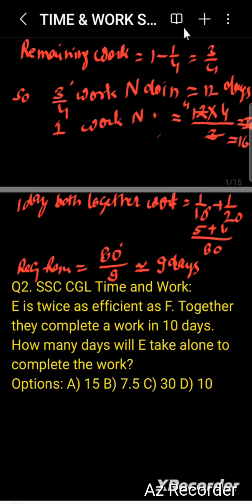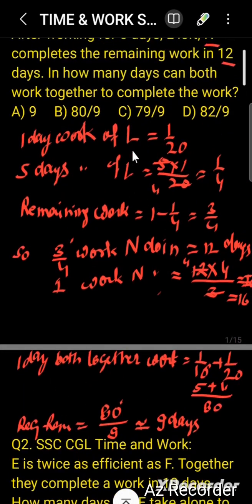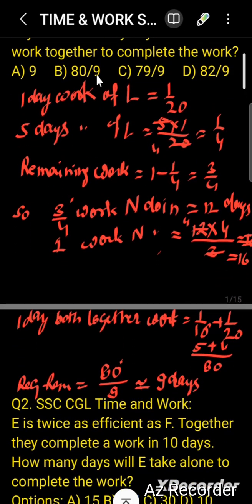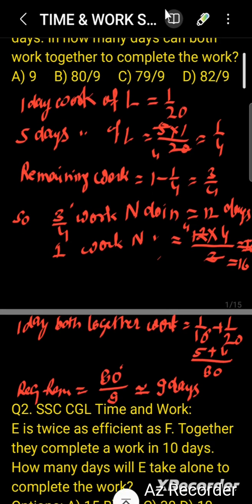So we can say approximately 9 days, but the exact answer is 80/9. So option B is correct. Approximately it comes to 9, but the exact answer is 80/9.